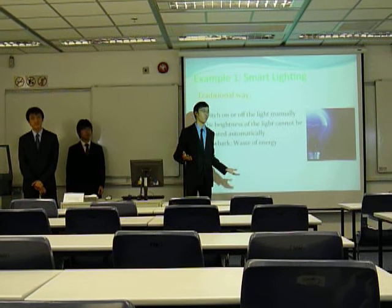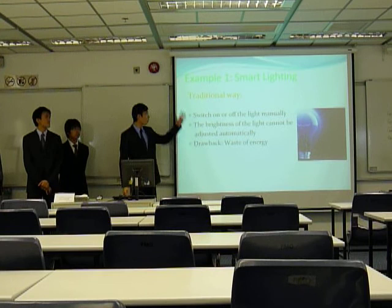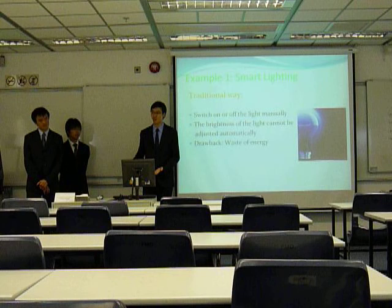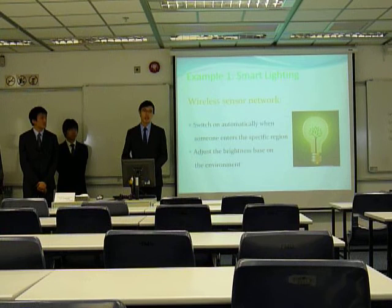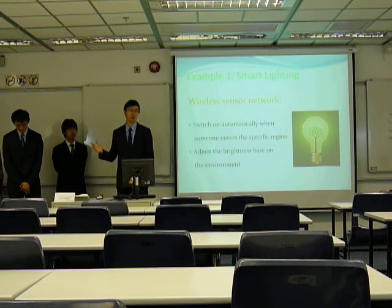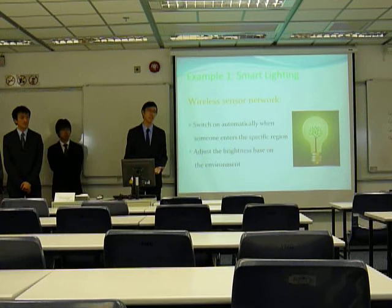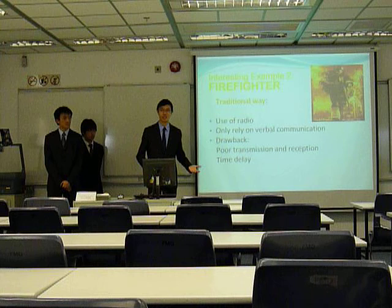So here, we'll move on to something more interesting — that is the application of the wireless sensor network. One example is smart lighting. In the traditional way, just like what we do in our homes, you come in and switch the light on and off manually and adjust the brightness yourself. However, with the wireless sensor network, you can achieve smart lighting. Sensor networks can detect motion and send a signal to the computer to turn the lights on and off. They can also sense the brightness level in the room from daylight and adjust it according to the desired reference level.